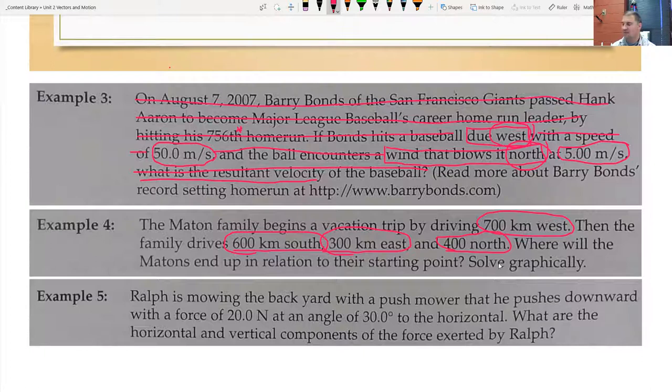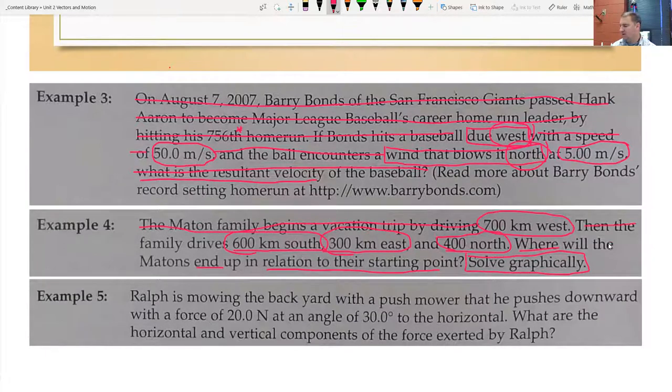What's the question? Where will the Maitons end up in relation to their starting point? So where in relation to starting point. And then a keyword for us at least is solve graphically. We'll go ahead and do it algebraically as well, but this one you should be able to get a pretty good estimate on.